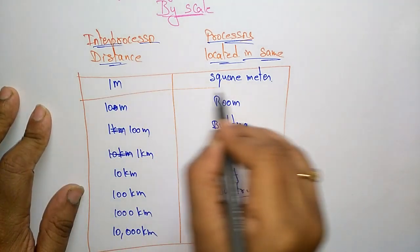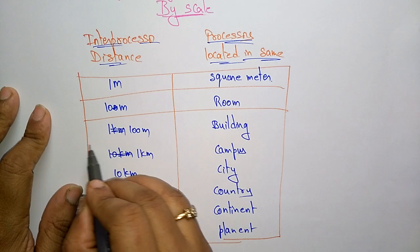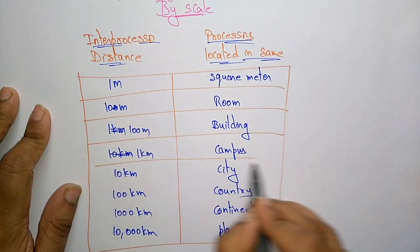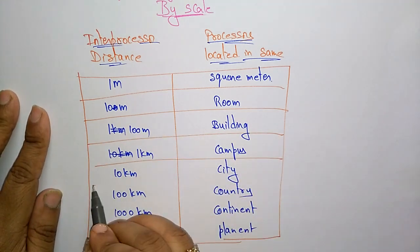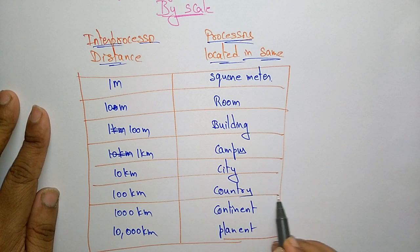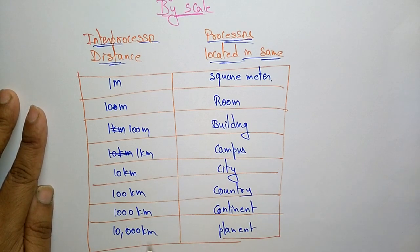So the full classification is: 1 meter — square, 10 meters — room, 100 meters — building, 1 kilometer — campus, 10 kilometers — city, 100 kilometers — country, 1000 kilometers — continent, and 10,000 kilometers — planet.